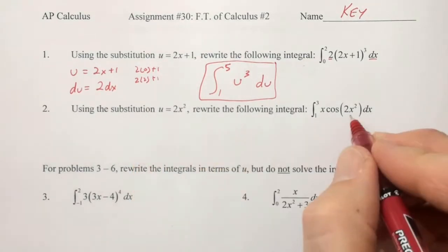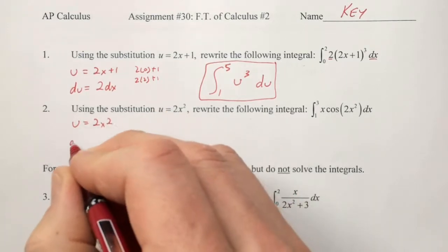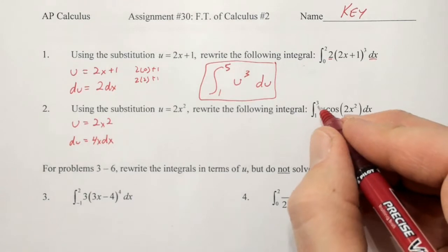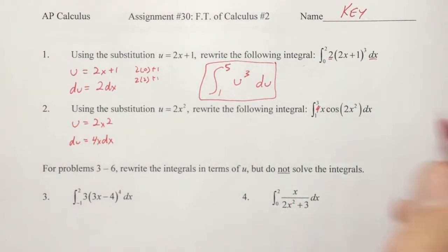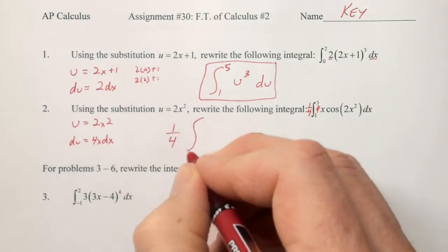For number 2, u is equal to 2x squared, which means that du must be 4x dx. We have the x, but we don't have the 4. If we put a 4 on the inside, we need to counterbalance with a 1/4 on the outside. So we're going to have 1/4 the integral.